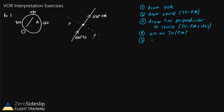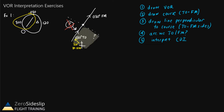Step five is to interpret the course deviation indicator. Here the CDI is on the 300 side of the instrument, which tells us that the selected course has to be to the west-northwest of the airplane. If we were in one quadrant, the course would not be to the west of the airplane — it would be to the southeast. But if the airplane were in the other quadrant, then drawing a line from the airplane to the course, the course would be in a 300 or west-northwest-ish direction. So the airplane has to be somewhere in that quadrant. How far exactly depends on how much the CDI is deflected from center.